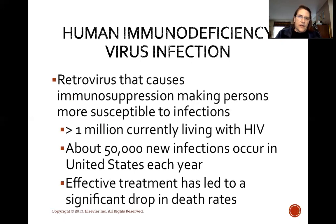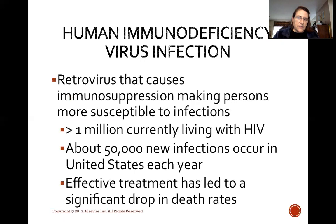Let's talk about human immunodeficiency virus infection. HIV is a retrovirus that causes immunosuppression, making persons more susceptible to infections. Greater than 1 million people are currently living with HIV. About 50,000 new infections occur in the United States each year. Effective treatment has led to a significant drop in death rates, primarily in countries with good healthcare.